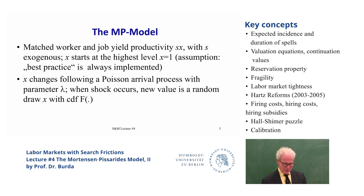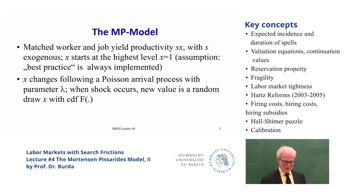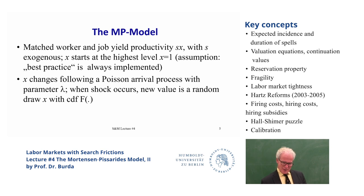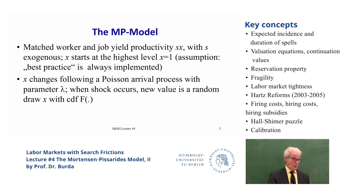In the Mortensen-Pissarides version, as soon as you find a match, there's a constant probability of a change in productivity. If you start at 1, it can always go down, and after that it might go up or down — it depends on the distribution of productivity, which is assumed to be identical and time-invariant. So everyone's identical ex ante, and the probability of a good or bad shock is given by distribution F. The probability of getting shocked is constant — that's this Poisson arrival process.